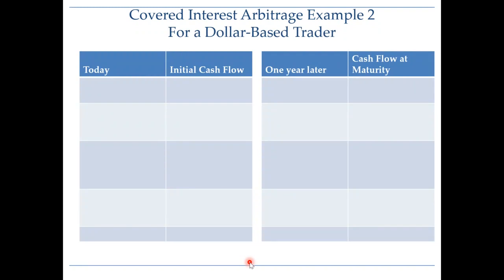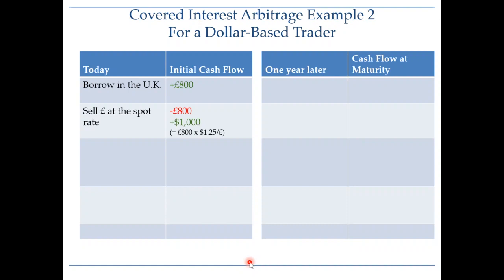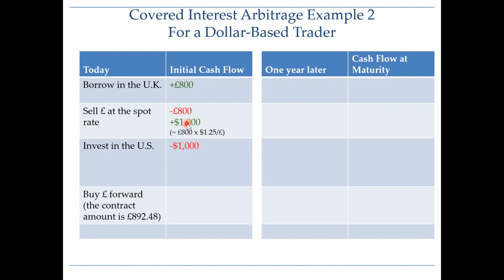For the exact set of transactions: we borrow 800 pounds in the UK, then convert those 800 pounds into dollars at the spot market so we can invest in the US. At the exchange rate of $1.25, 800 pounds gives us $1,000. We then immediately invest those $1,000 in the US.